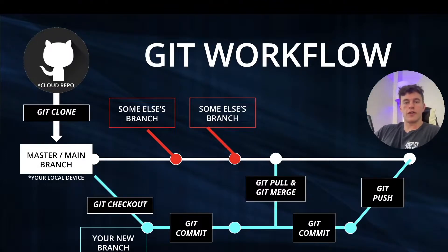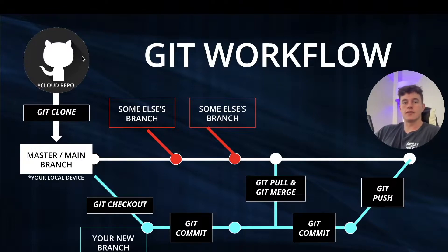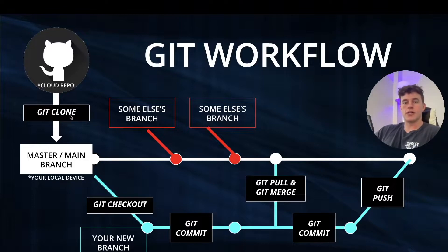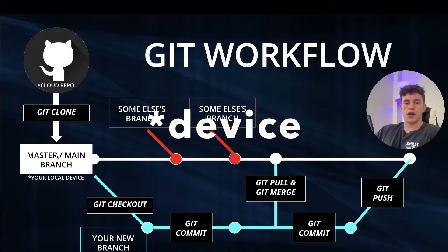To start off we have a workflow that describes how Git works in a workplace, and it all begins with a cloud repository which is where your company will likely have hosted their code. Common examples are GitLab and GitHub — you'll create an account connected with your organization and have access to different repositories. The first command we'll learn is git clone, which pulls the cloud repository down onto your local machine.